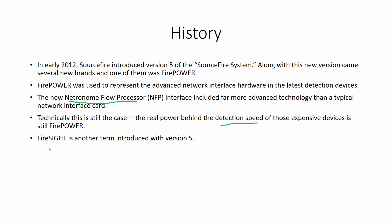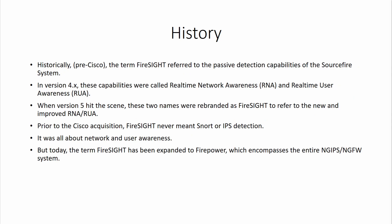After version 5, Sourcefire was rebranded to Firesight. Before Cisco acquired Sourcefire, the term Firesight referred only to detection — the device was only capable of detection and could not block traffic at that time. In version 4.x it was known as Real-Time Network Awareness (RNA) and Real-Time User Awareness (RUA), but in version 5 it was rebranded to Firesight. From that point, RNA and RUA were referred to under the term Firesight.